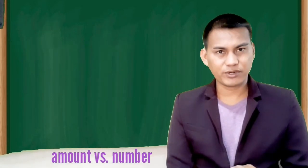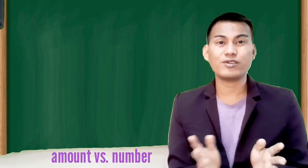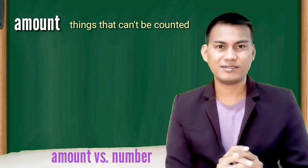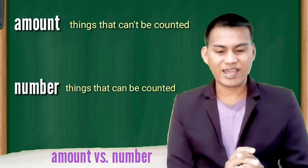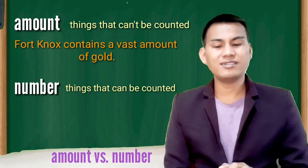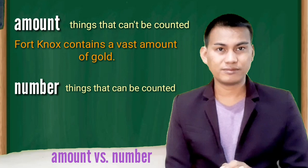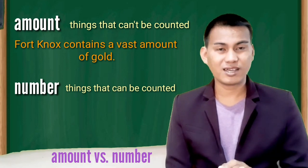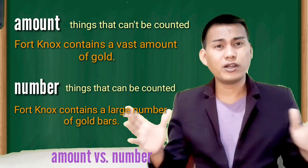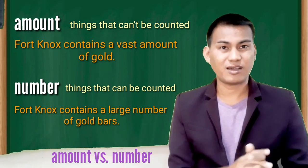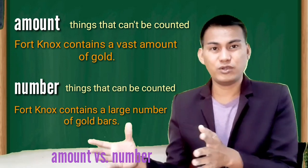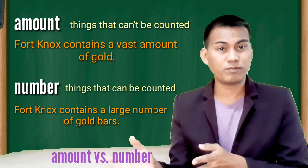Amount versus number. Amount and number, they both refer to quantity. Use amount for things that can't be counted. Whereas on the other way around, use number for things that can be counted. Fort Knox contains a vast amount of gold. Gold, you can't count one gold from the other so you weigh them. Fort Knox contains a large number of gold bars. Now in this way, we are still talking about gold, but this gold is in units of bars. So you can count one gold bar from the other. So we use number.